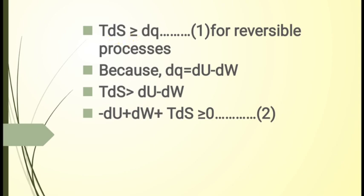This equation is useful for reversible processes. From the first law of thermodynamics, dQ equals dU minus dW. Since dQ equals TdS, we substitute to get TdS is greater than or equal to dU minus dW. Rearranging, we bring all terms to the left side: minus dU plus dW plus TdS is greater than or equal to zero.